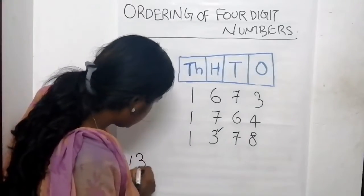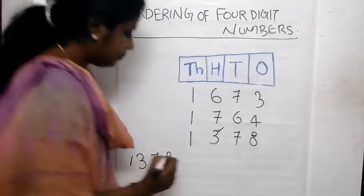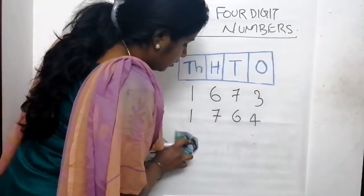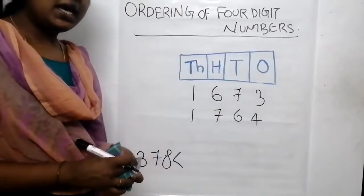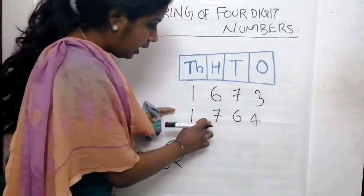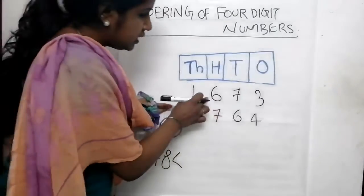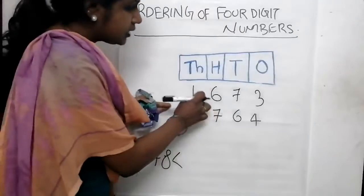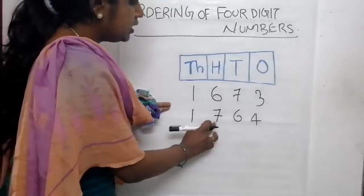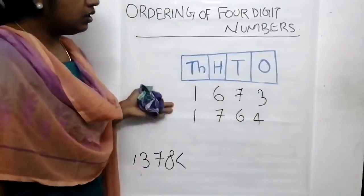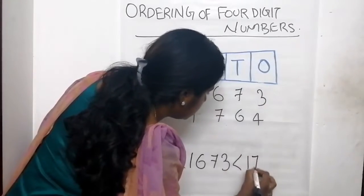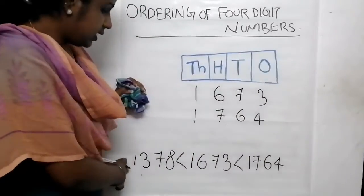We can write 1,378, less than. We have completed this number and can remove it. Now the remaining two numbers - we have to compare the hundreds place again. We have 6 and 7. Which number is less between 6 and 7? We know 6 is smaller. So this number 1,673 is less than 1,764.